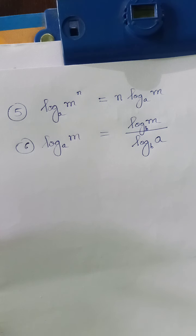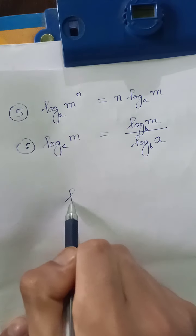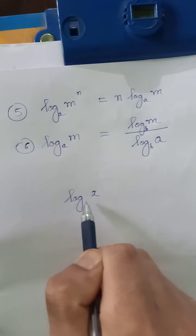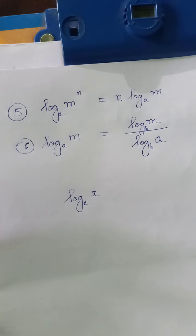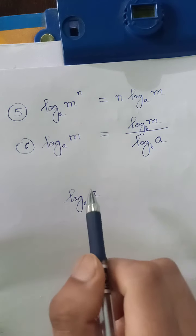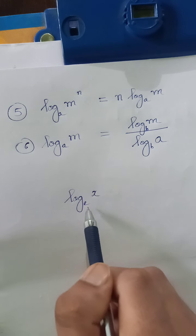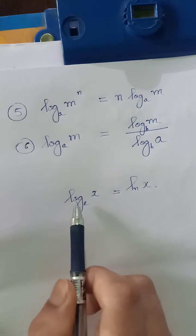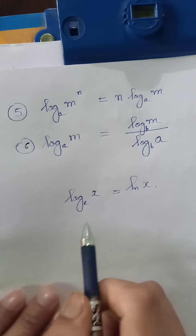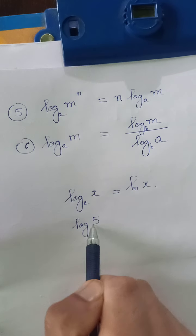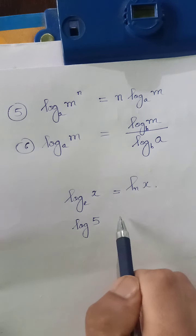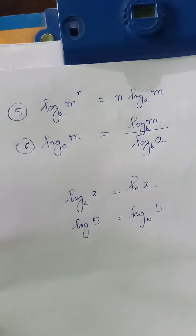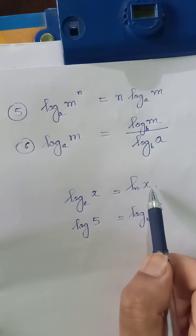In integration and differentiation in physics, whenever we introduce a logarithm it has base e, and log of any term with base e can also be written as ln of x. So ln of x means log of x with base e. If you write a logarithm without any base, it is understood that the base is 10.